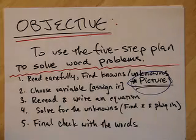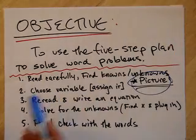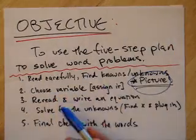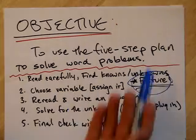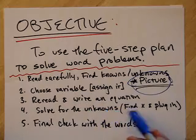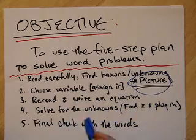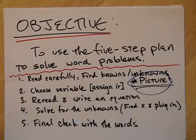Step two, choose a variable. So assign the variable. Say, x is going to be something. Three, reread and write an equation. So read it again. Once you've chosen a variable, read it again. It's okay. You have time. Read it. Write the equation. Then solve for the unknown. Solve for x. You want to find what x is, and then plug it in for the other unknowns. And finally, go back and do a final check with the words.